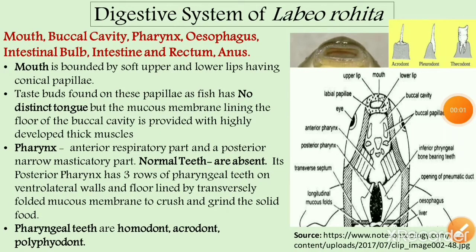The digestive system of Labeo rohita includes mouth, buccal cavity, pharynx, esophagus, intestinal bulb, intestine, rectum, and anus. First we will discuss the mouth.